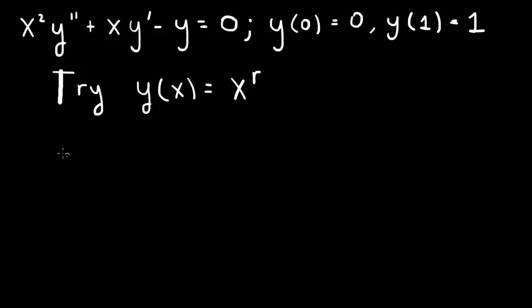So the second derivative then will give us an r times an r minus 1, and then we'll have an x to the r which cancels. And the first derivative will give us an r, and then we'll have an x to the r which cancels. So plus r minus the function itself, which will be x to the r which cancels. And this will be 0. So we end up with an equation that depends only on r and not on x.